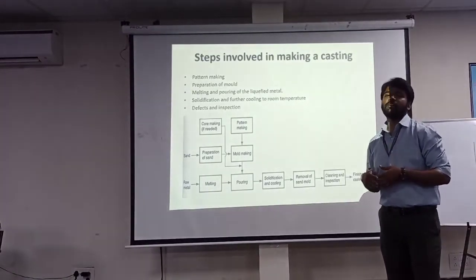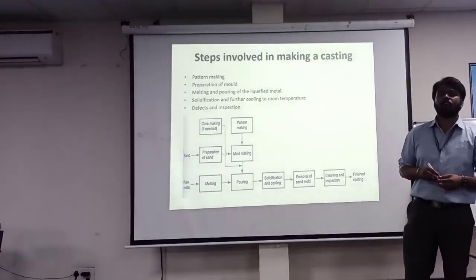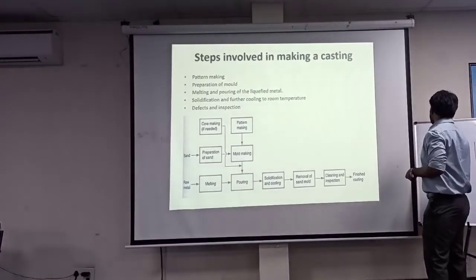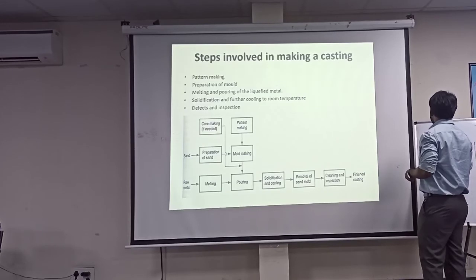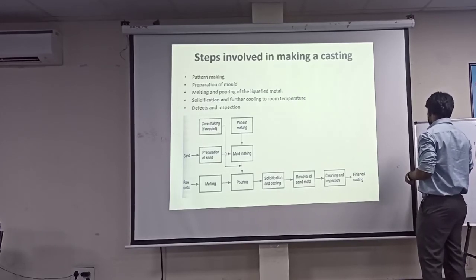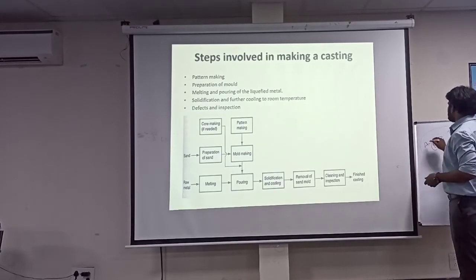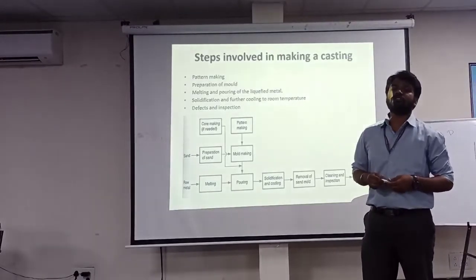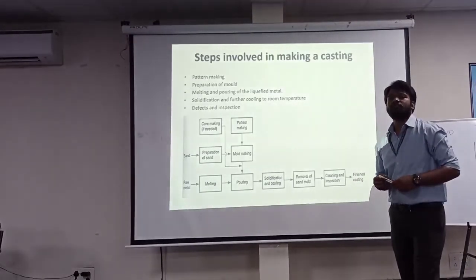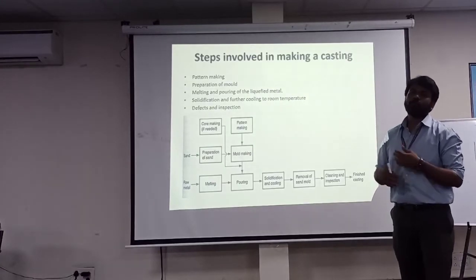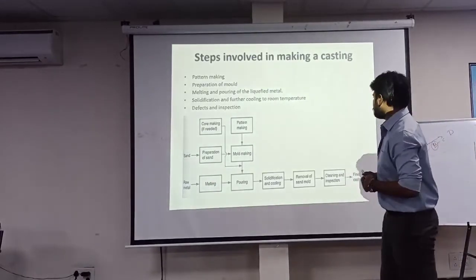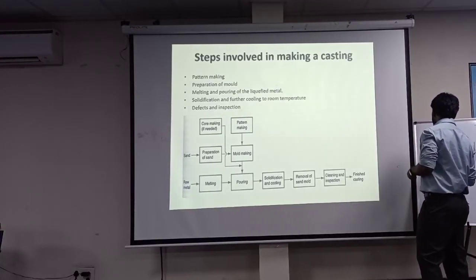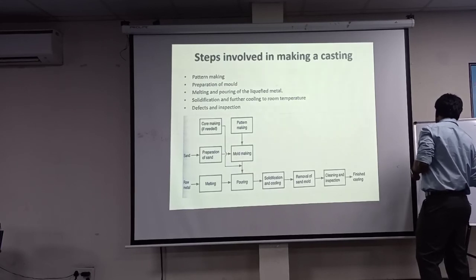Casting is the primary manufacturing process. If you want to manufacture a component, the initial stage — stage A — is the casting process, where there may be a lot of irregularities. In order to remove any type of irregularities, the component has to undergo the secondary manufacturing process, which may be either machining or welding, depending upon our application.